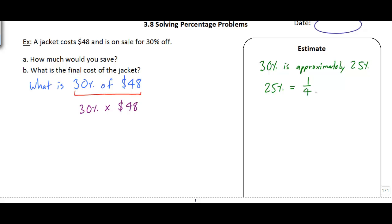So for my estimate, I'm just going to figure out what is a quarter of $48. One quarter of $48, I know 4 goes into 48 twelve times, so that would be around $12. So I'm estimating it somewhere around $12. I guess 30% will be a little bit more than 12.